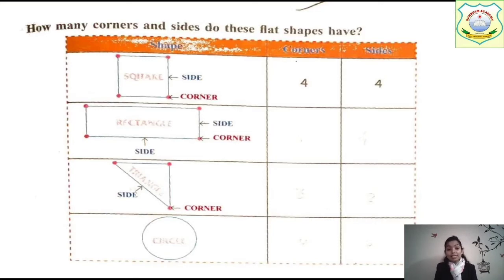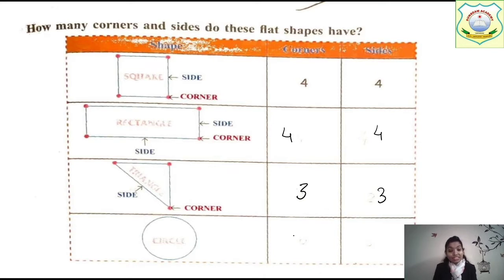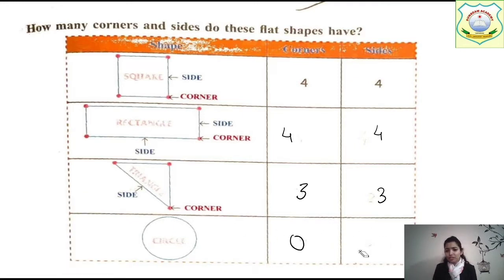How many corners and sides do these flat shapes have? Kitne sides aur kitne corners — we need to write here. The first one is already done: square has four sides and four corners. Rectangle has four corners — you can see with a pink dot — and four sides. Triangle has three corners and three sides. Circle has zero corners and zero sides — you can write 'no sides' or 'zero', it's your wish. It is very easy — write zero over here.